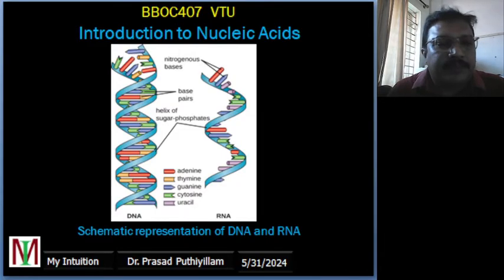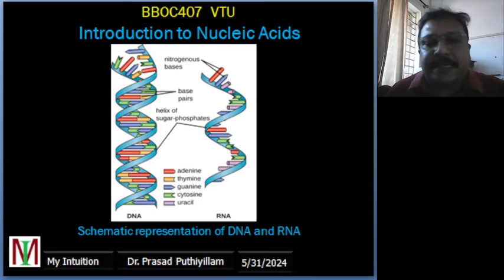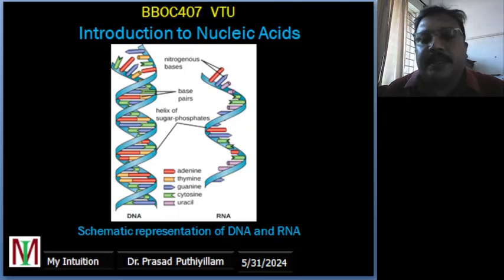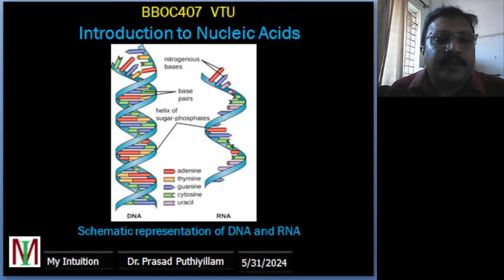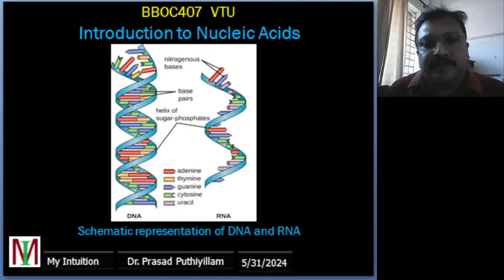DNA is a double-stranded molecule and RNA is a single-stranded one. DNA carries the genetic blueprint of an organism and is made up of nucleotide units — mainly adenine, thymine, cytosine, and guanine. These nucleotides in DNA pair like adenine with thymine and cytosine with guanine, forming the structure of DNA.